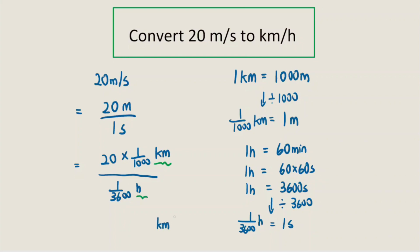Now we have kilometers and hours, which gives us the final units of kilometers per hour. Using a calculator, we compute 20 times 1/1,000 divided by 1/3,600, and we get 72 kilometers per hour.